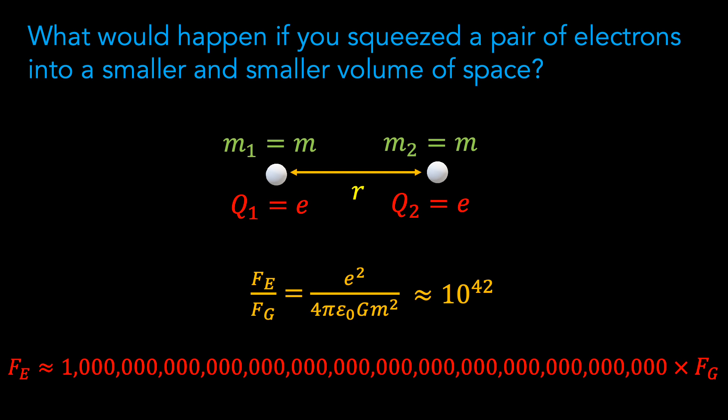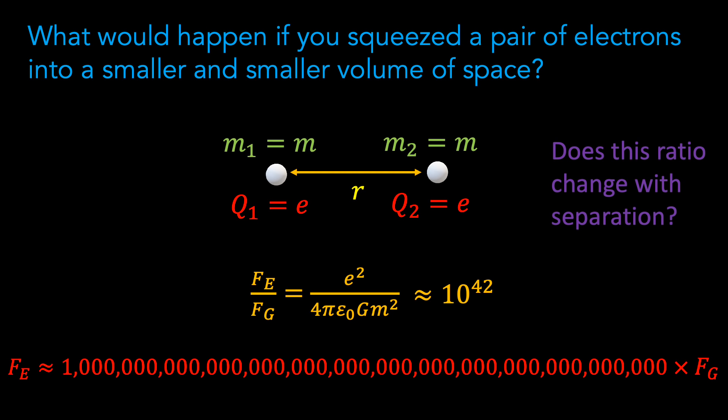Our analysis would also suggest that the ratio of these two forces is independent of the separation of the two electrons. But as is often the case in fundamental physics, things are not quite as simple as they first appear. One thing that we have not yet taken into account is quantum mechanics. One very important lesson learnt from quantum mechanics is that the classical laws of physics start misbehaving when we probe nature on smaller and smaller scales. More specifically, Heisenberg's uncertainty principle tells us that as we squeeze the two electrons into an ever smaller region of space, the laws of quantum mechanics kick into action, causing an inherent quantum jitter in the motion of the two electrons. The smaller the region of space, the greater the quantum mechanical jittering.